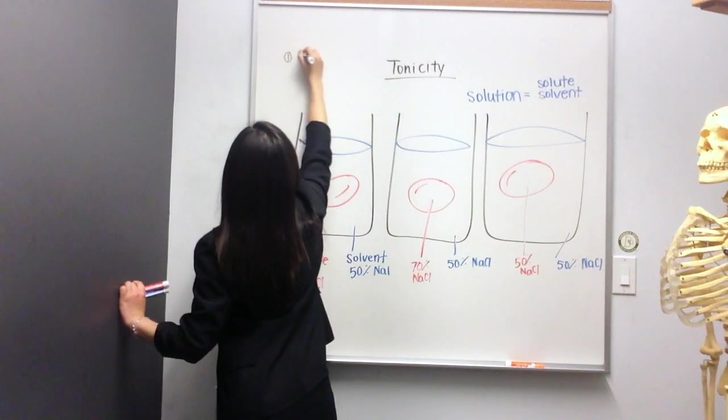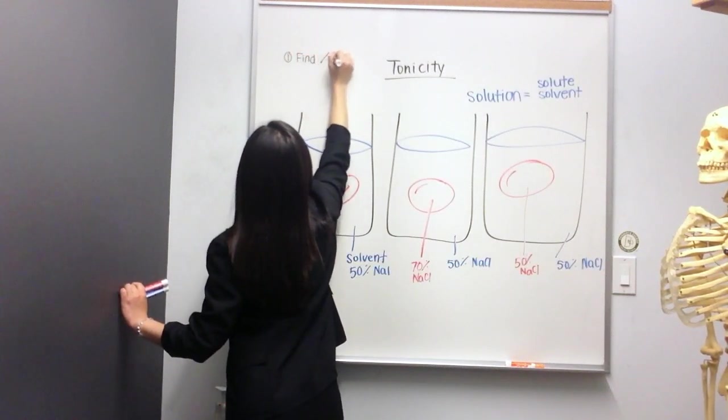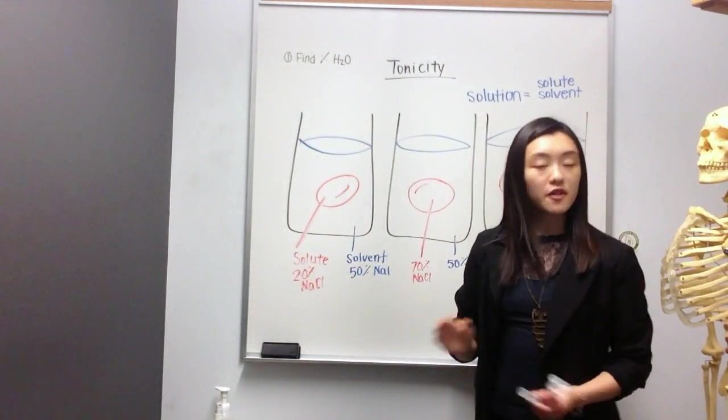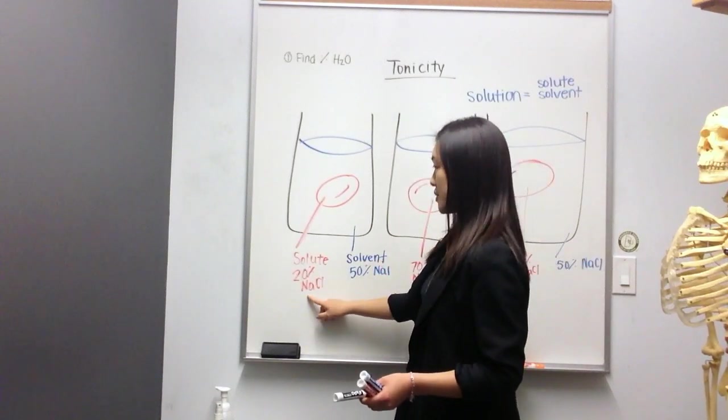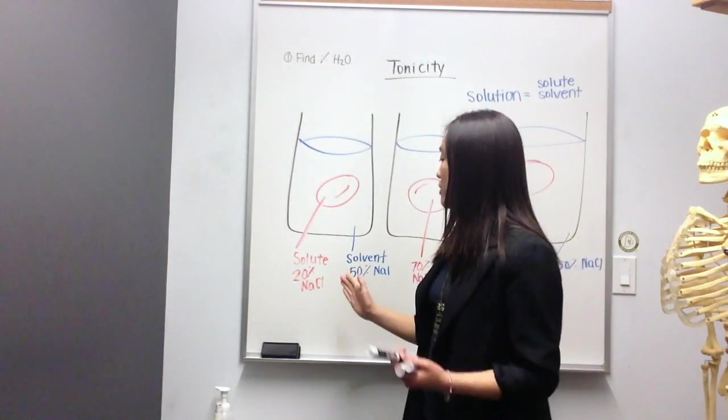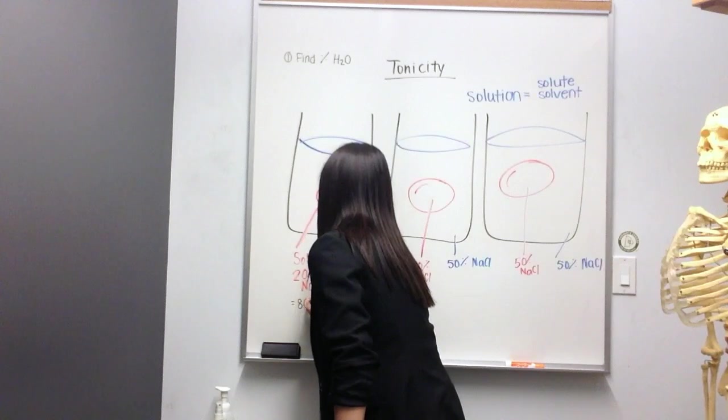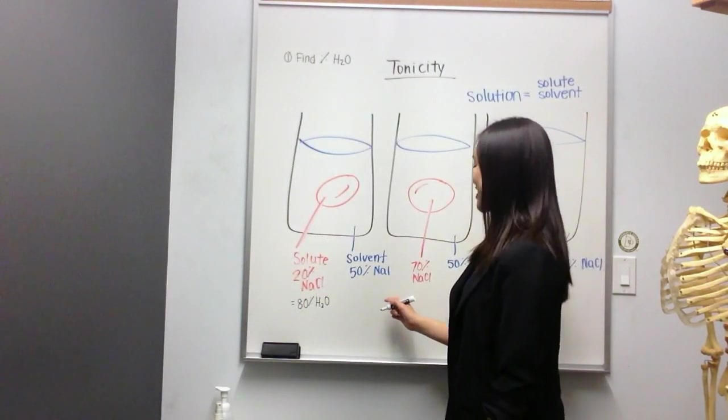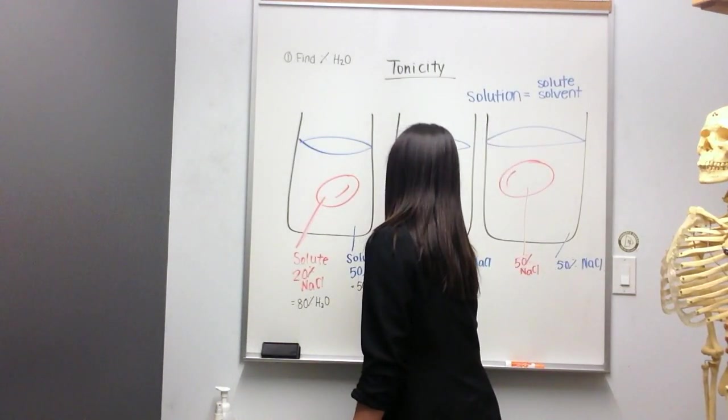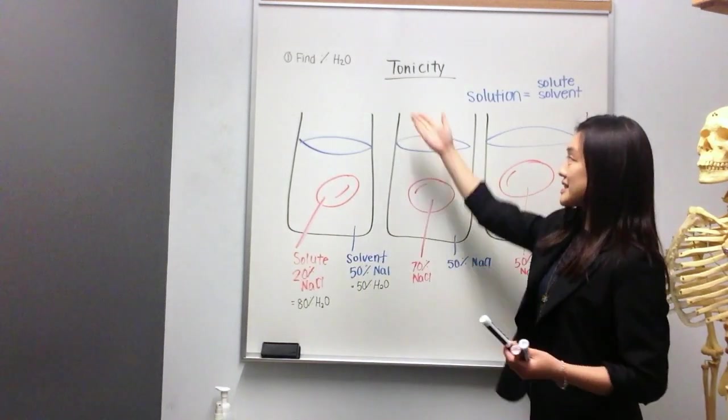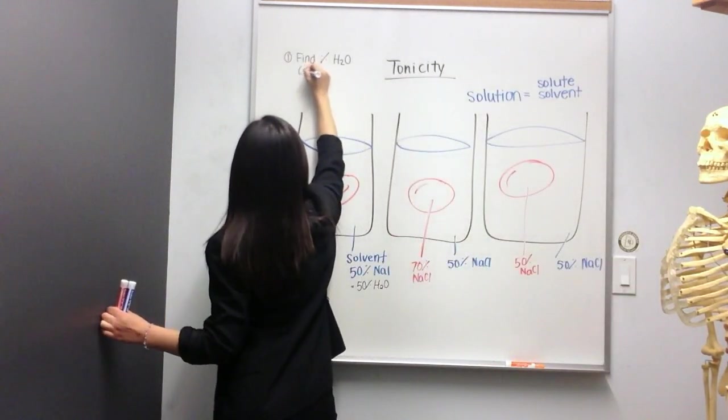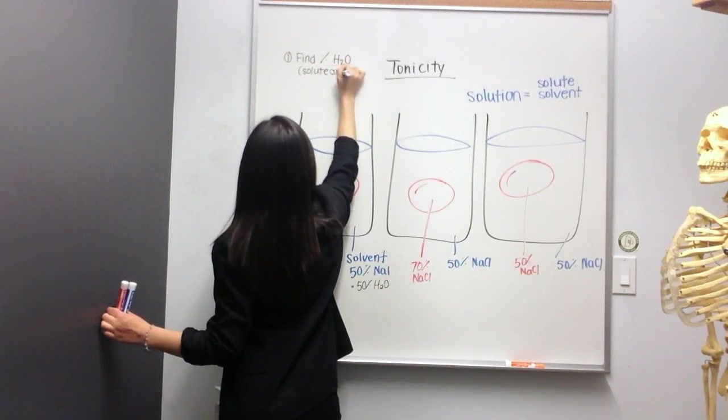Step one is to find percent H2O. And we're going to look at each part individually. So the first part is we're looking at the solute. Within this cell, if 20% is sodium chloride, the remainder would be 80% H2O. So just by doing simple subtraction, the solvent would have 100 minus 50, which is 50% H2O. The next step, so we've already found the percent of water in the solute and the solvent. So I'll make a note here, solute and solvent, because you need to do both.